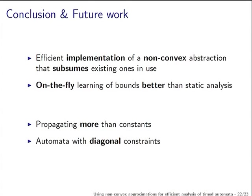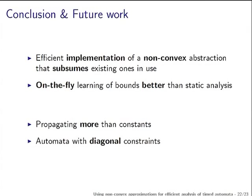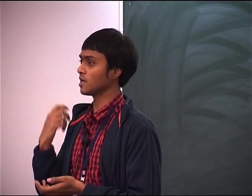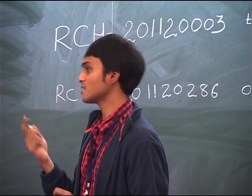To summarize: we can efficiently use a non-convex abstraction with efficiency as good as that of normal inclusions, and we can learn the parameters for abstraction on the fly, exploiting the semantics fully — knowing what constants are relevant during the actual reachability analysis. Future directions include propagating more than just constants during exploration, and extending this to automata with diagonal constraints.